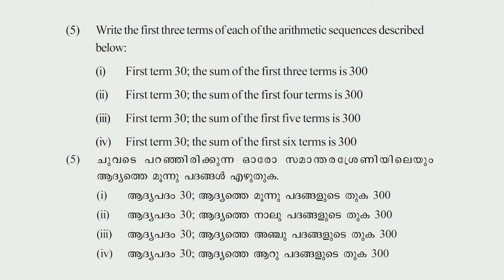Now let's go to the next question: Write the first three terms of each of the arithmetic sequences described below. First term 30, the sum of the first three terms is 300. First term 30, the sum of the first four terms is 300. First term 30, the sum of the first five terms is 300. First term 30, the sum of the first six terms is 300.